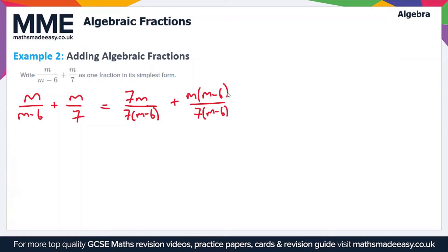If we simplify this, this is going to give us 7m plus m lots of (m-6) over 7 lots of (m-6). If we expand this bracket now we get 7m plus m² minus 6m and we're dividing that by 7m minus 6.